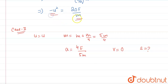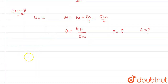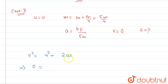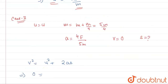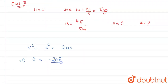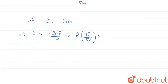Applying v² = u² + 2as again: 0 = u² + 2 × (4f/5m) × s. Substituting u² = −20f/m, we get 8f/5m × s = 20f/m. The f and m terms cancel from both sides.